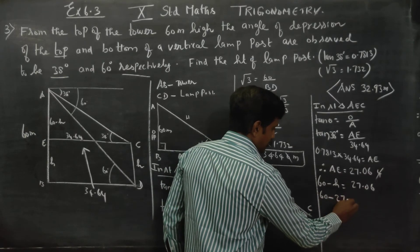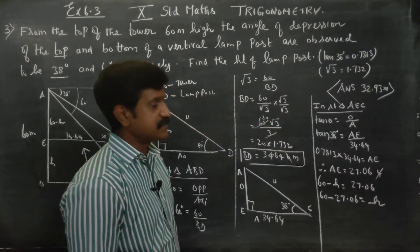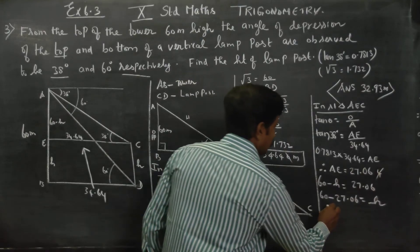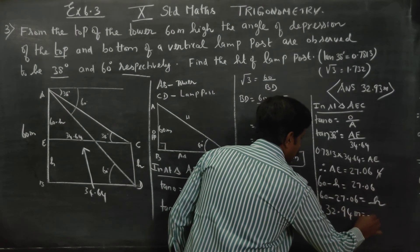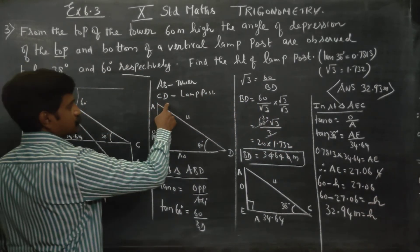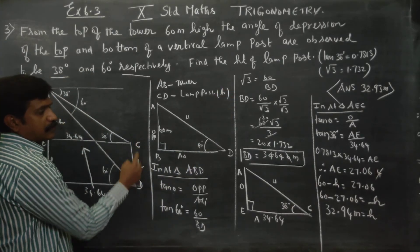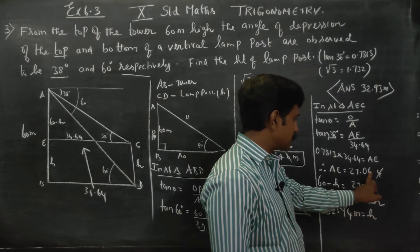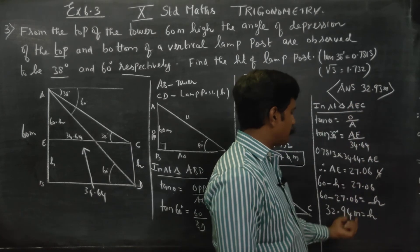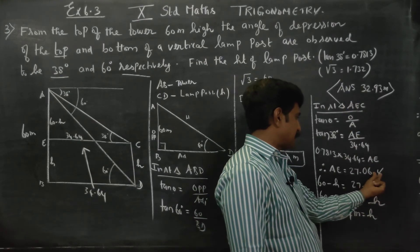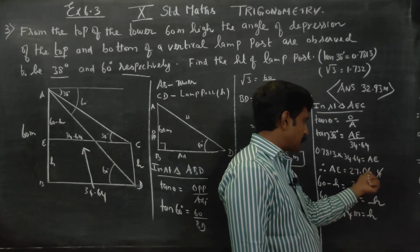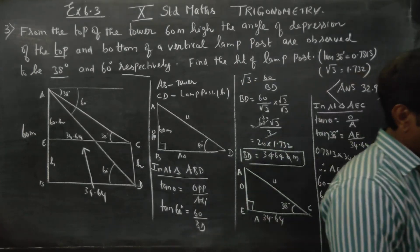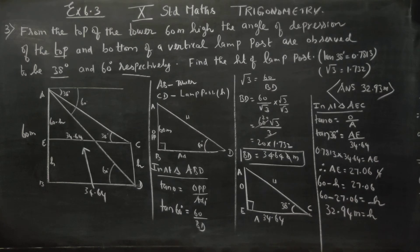So 60 minus 27.06 gives us the value. Rearranging, H equals 60 minus 27.06, which equals 32.94 meters. Therefore H equals CD, which is the lamp post height. The height of the lamp post H equals 32.94 meters. The book answer is approximately 32.93 meters due to rounding.